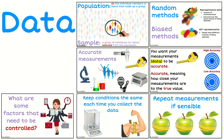One of the things that we look for is whether the data or the sample is representative of the population — was a random method used, was a biased method used? We want to look at the measurements: were the measurements accurate? So we want to look for information about how the data was collected.